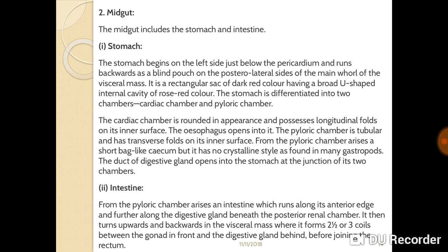The midgut includes the stomach and intestine. The stomach begins on the left side just below the pericardium and runs backward as a blind pouch on the posterior lateral sides of the main wall of the visceral mass. It is a rectangular sac of dark red or rose-red color with a broad U-shaped internal cavity. The stomach is differentiated into two chambers: the cardiac chamber, which is rounded with longitudinal folds on the inner surface where the esophagus opens, and the pyloric chamber, which is tubular with transverse folds. From the pyloric chamber arises a short bag-like cecum, but it has no crystalline style as found in many gastropods.